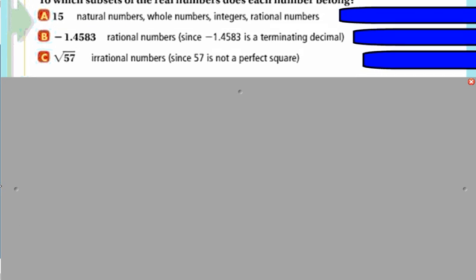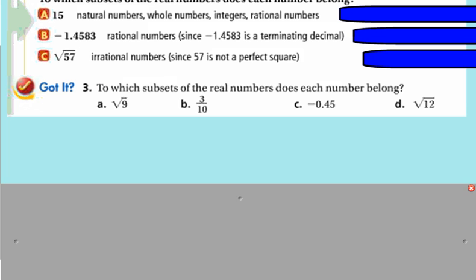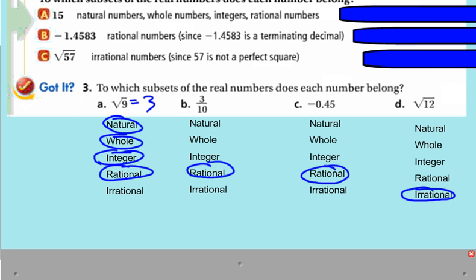So why don't you take a look at these four and see if you can tell me what category each of those goes to. All right. So a is going to actually, square root of 9 is 3. So that's going to be all the above. That's a natural, whole, integer, and rational. B, 3 tenths, that's a fraction, so it's rational. Rational is fractional. C is negative .45. That can be made into a fraction, so that's rational as well. And then D is going to be a never-ending, no-pattern decimal. If you type it into your calculator, that is irrational.